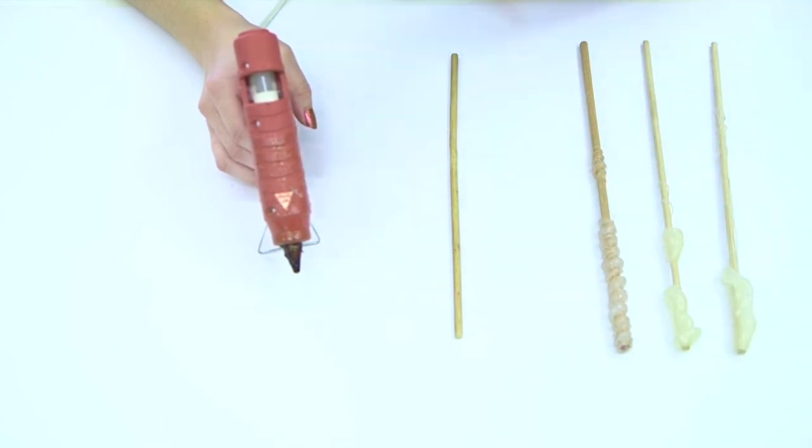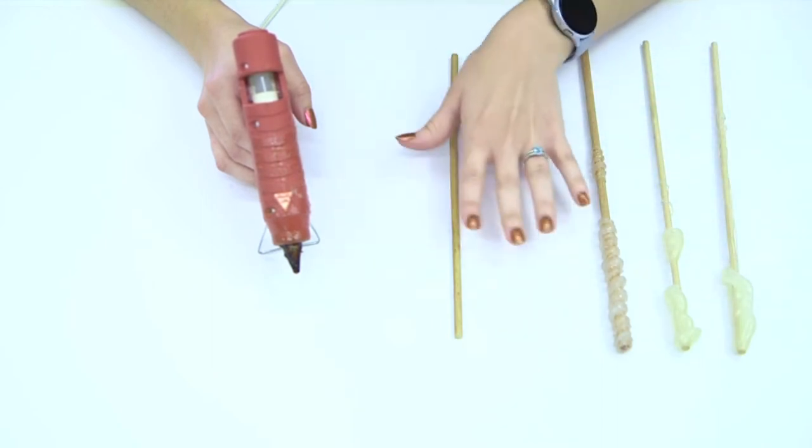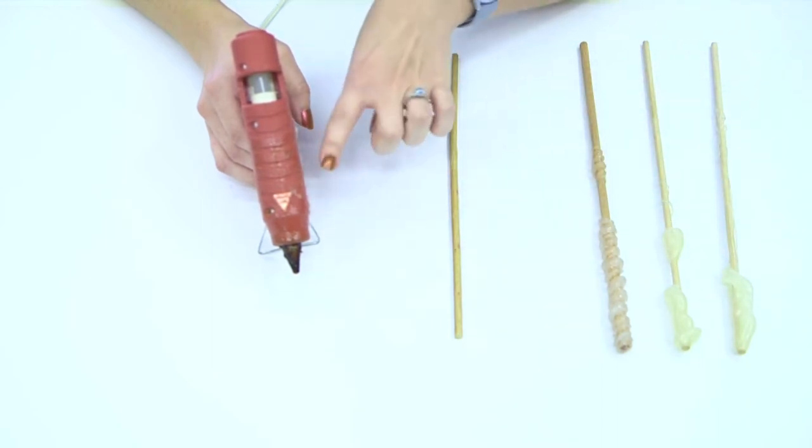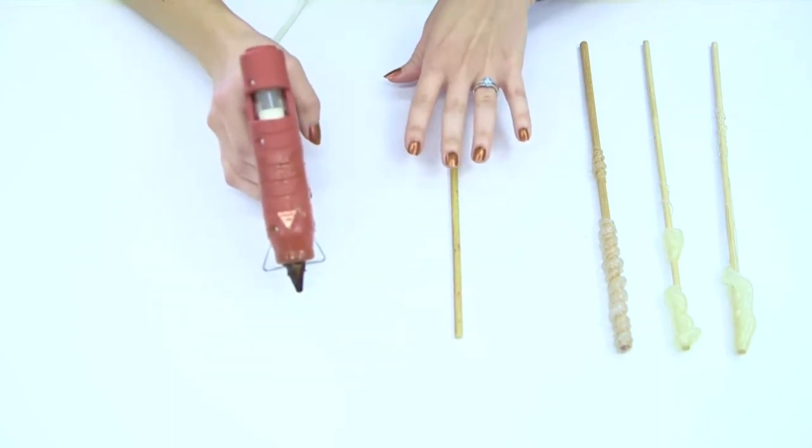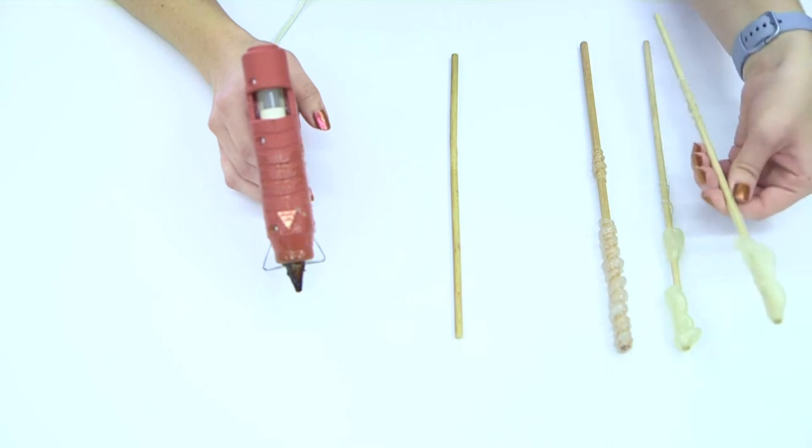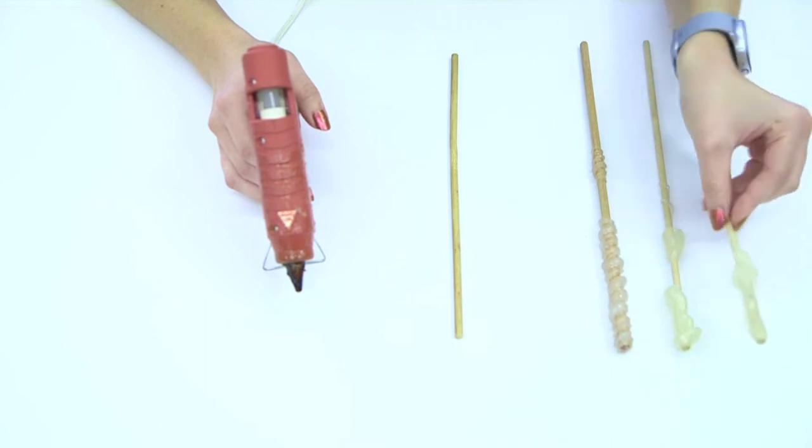Now with hot glue obviously you cannot touch any of the glue so when I say forming the shapes you're going to use what you can with the actual hot glue gun by just moving it in a certain way or just kind of letting the glue run down and twisting your dowel.